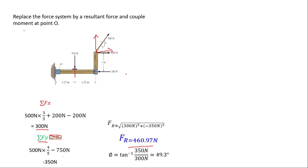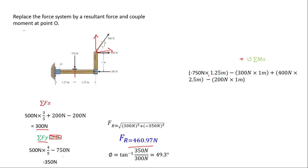Now let's find the couple moment at point O. We take anti-clockwise as positive. First, negative 750 newtons times 1.25 meters — this force moves clockwise. Then minus 300 newtons (the resolved x component) times 1 meter, also in the clockwise direction.